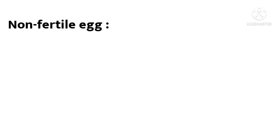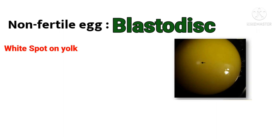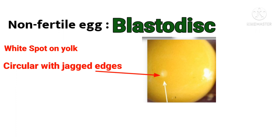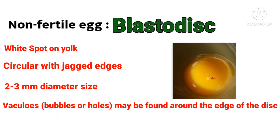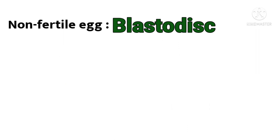When the egg is not fertilized, the germinal disc is called a blastodisk. There are four main characteristics associated with an infertile germinal disc. Number one: the germinal disc is a solid white spot on the yolk. Number two: the germinal disc is not uniform — it is somewhat circular but has jagged or ruffled edges. Number three: the disc is about two to three mm in diameter. Number four: many vacuoles (bubbles or holes) may be found around the edge of the disc, and sometimes vacuoles are also present inside the disc.